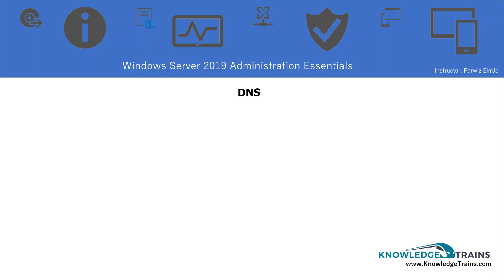What do you think will happen if today you were accessing google.com with an IP address? You were accessing Facebook, Gmail, Hotmail and all other domains with an IP address. So instead of typing google.com, you were typing something like 199.66.6.33. That was actually going to be a big problem because it's really hard to remember IP addresses.